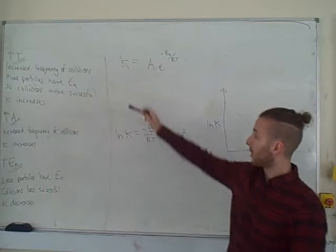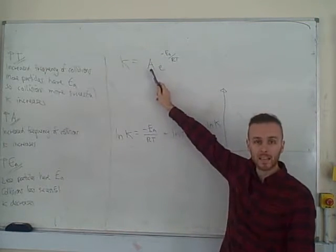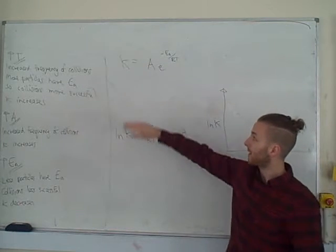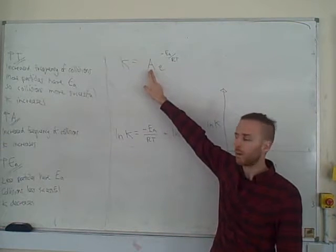Either which way, the Arrhenius equation is usually written in this form: k is equal to A, and then e to the minus Ea over RT. What do these stand for? Well, A is known as the pre-exponential factor.